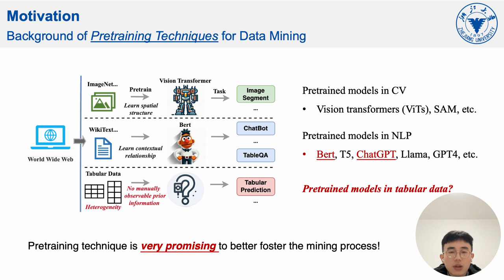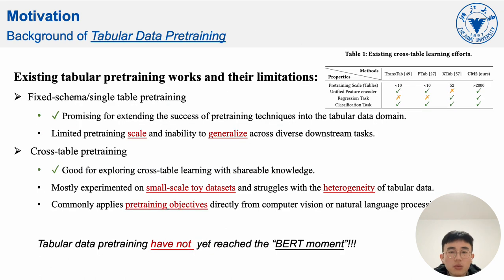As we know, pretraining techniques in computer vision and natural language processing have achieved certain successes. However, how are pretrained models in tabular data? The existing works on tabular data pretraining can be broadly categorized into two stages: firstly, early-stage single-table pretraining; secondly, a few recent works started to try cross-table learning. However, due to the limited pretraining scale or scalability and some unresolved technical challenges in cross-table pretraining, we believe that research progress in tabular data pretraining significantly lags behind relatively established research domains like natural language processing, and has not yet reached a breakthrough moment.